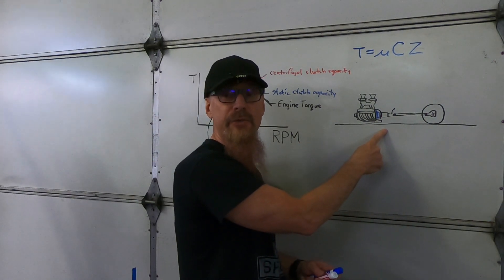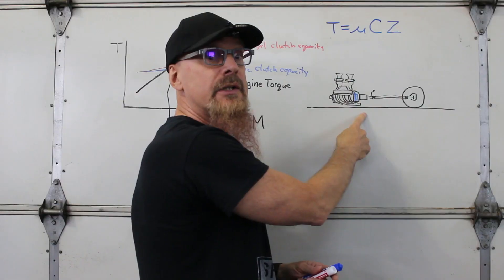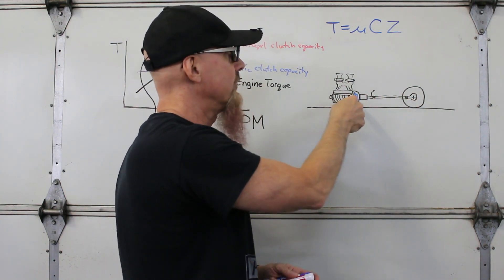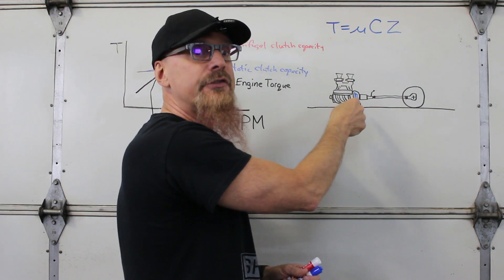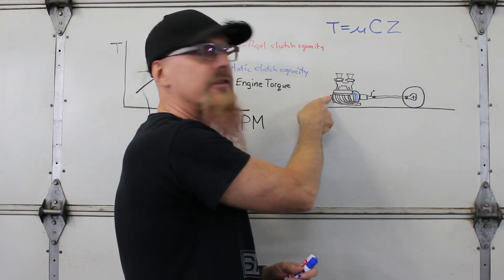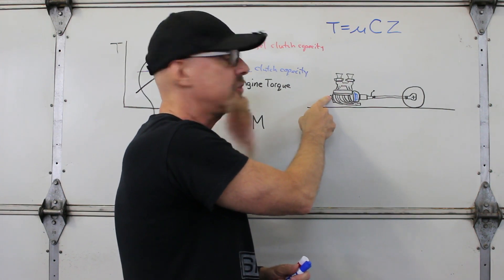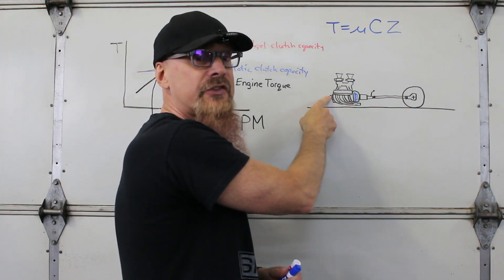Well let's think about our drag racing problem at launch again. At the starting line our vehicle's got zero speed. Thus the drive wheels, axles, driveshaft, transmission innards, and the clutch disc have zero speed. But the engine is at whatever launch RPM we're choosing. If we dump the clutch at this point only three things can happen.